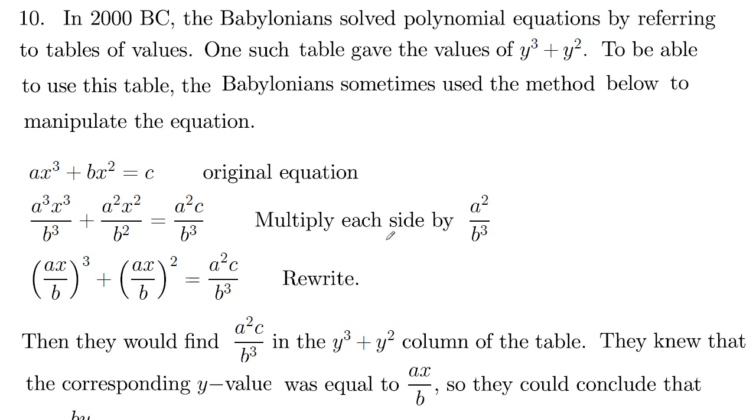So then next we're going to multiply each side by a squared over b cubed. If we multiply this first term times the a squared over b cubed, we'll get a squared times a is a cubed, we've got an x cubed and denominator b cubed. We're going to multiply that here and here, and then also on the right hand side.